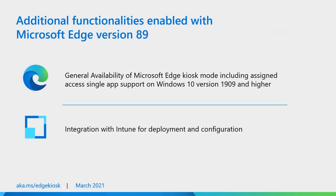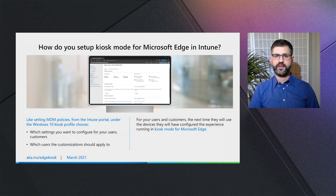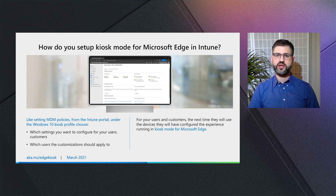Some additional functionalities enabled with Microsoft Edge version 89 include support for assigned access single app on Windows 10 version 1909 and higher. You can also configure and deploy Edge Kiosk Mode via an Intune profile, which we'll discuss in a moment. Configuration through the Intune portal is similar to Microsoft Edge legacy Kiosk Mode configuration — very similar to setting MDM policies or templates, where you choose which settings to apply for the device and the groups and users through the platform. The next time a user uses the device, they will enjoy the Kiosk Mode experience with the pre-configured customizations you created.